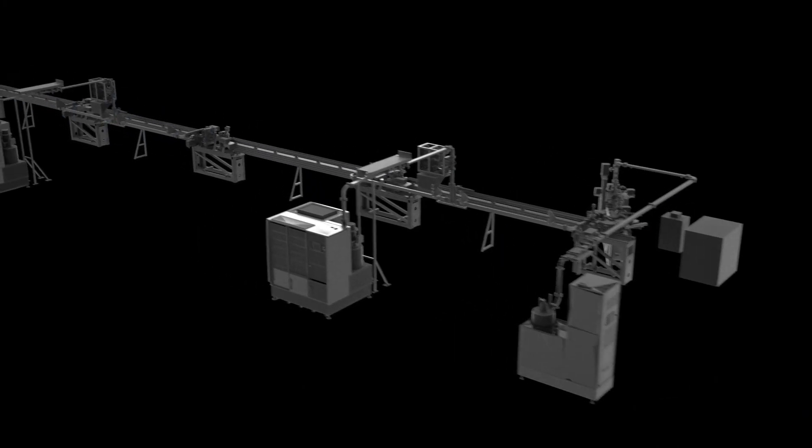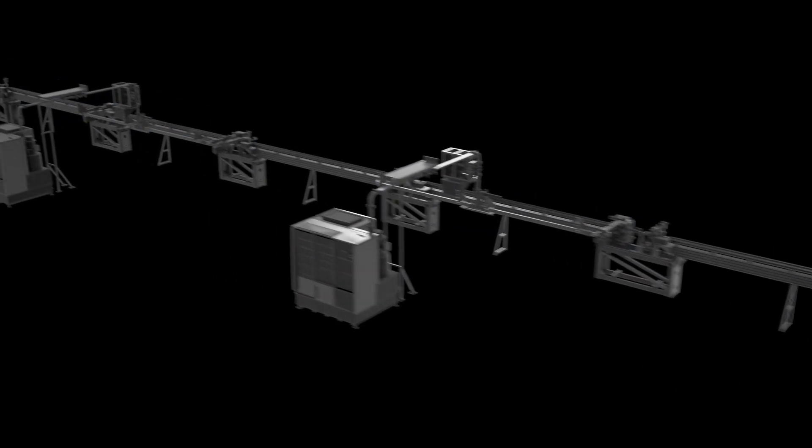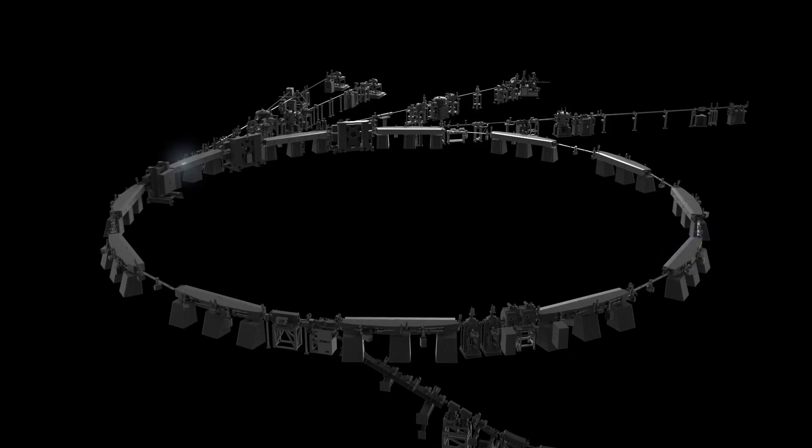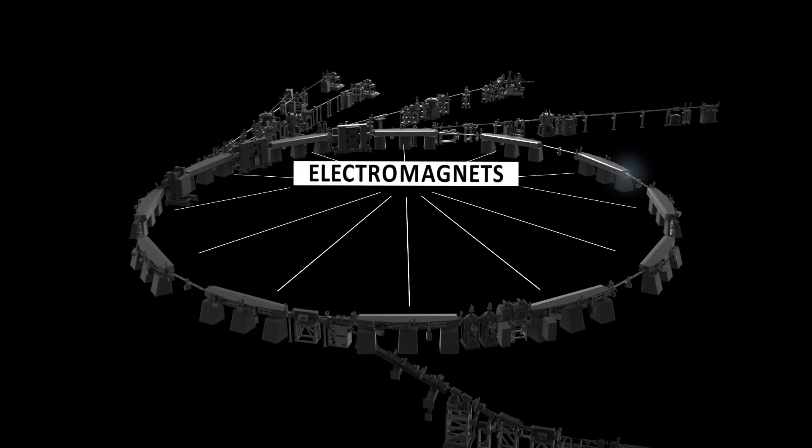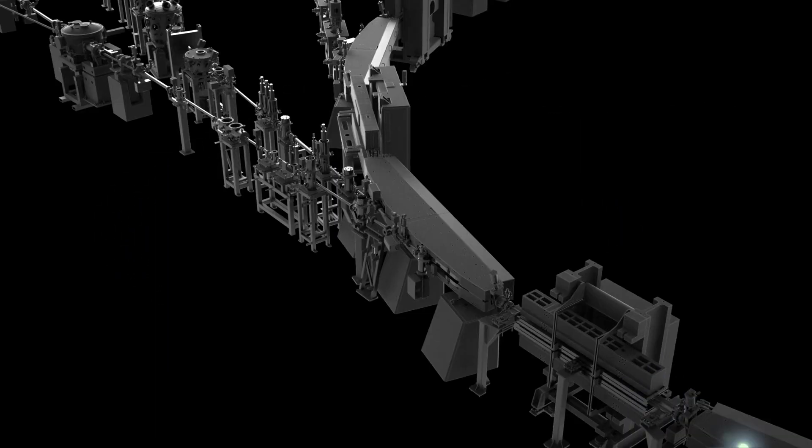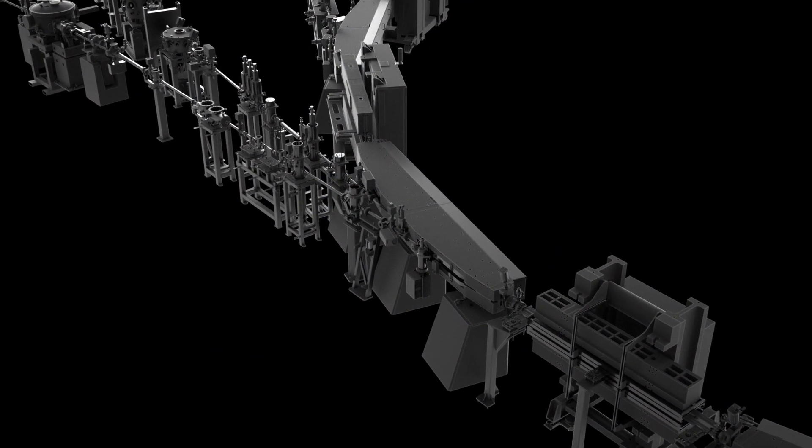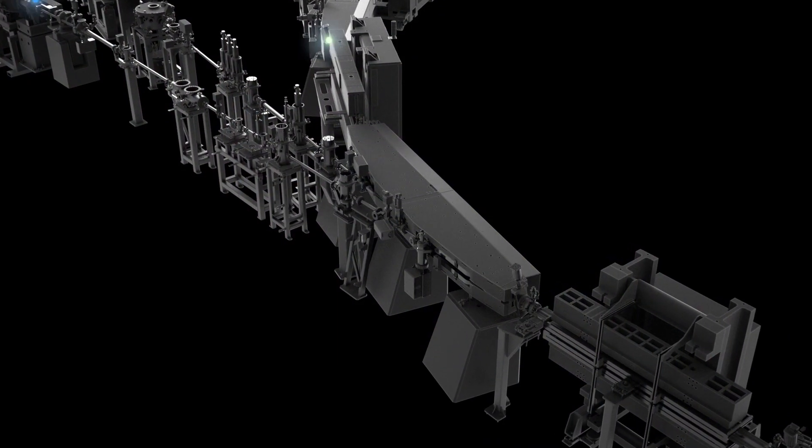Speeding electrons are injected from the linear accelerator into the synchrotron. Thanks to the power of 12 electromagnet blocks, their path is curved, hence they move on a closed orbit while emitting synchrotron radiation.